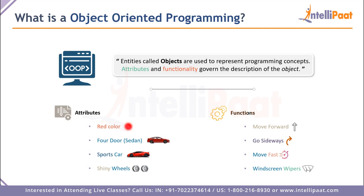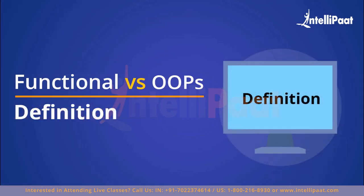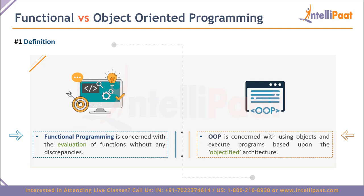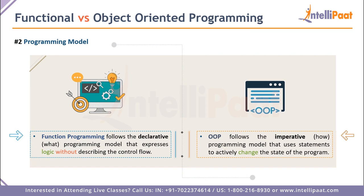With that quick understanding of both paradigms, let's check out a comparison. The first point is definition. Functional programming is all about evaluation — without needing to understand how things work or putting effort into processing the how part. With OOP, everything is objectified: every single thing the programmer uses, defines, or architects is considered an object, and hence the architecture is called object oriented programming.